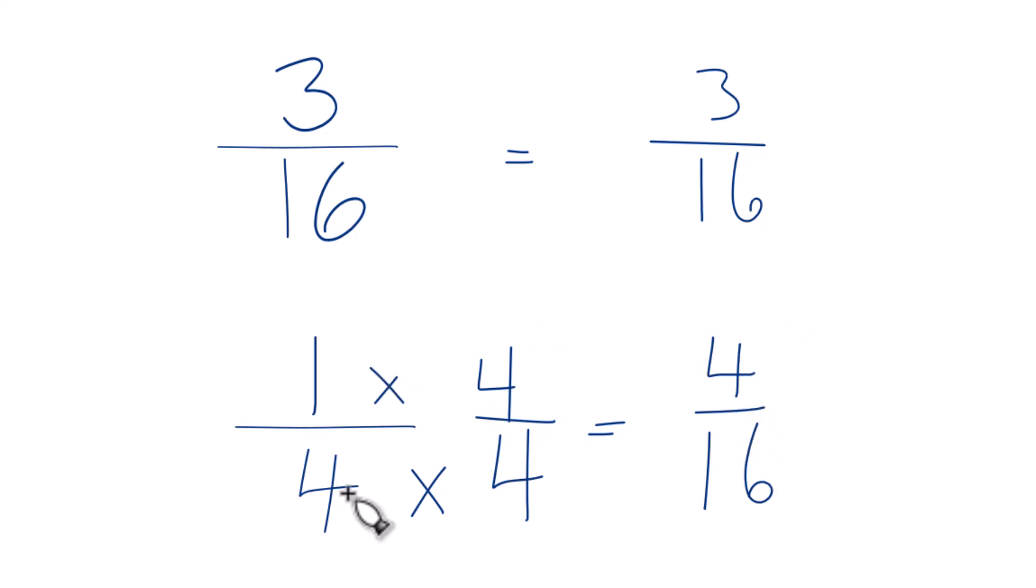4 sixteenths and 1 fourth, they both equal 0.25. But now, with the same denominator, we're just going to compare the numerators.